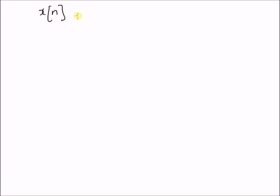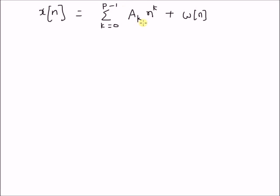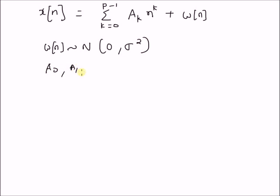Given the observation model x(n) = Σ_{k=0}^{p-1} a_k * n^k + w(n), where p is the order of the polynomial, n is the observation index, and a_k's are the coefficients. Here w(n) follows a Gaussian distribution with mean 0 and variance sigma squared. The unknown parameters are a_0, a_1, up to a_{p-1}.